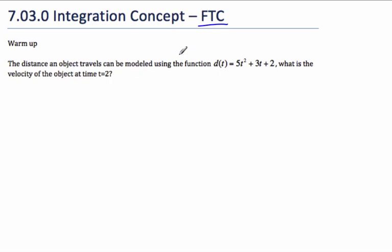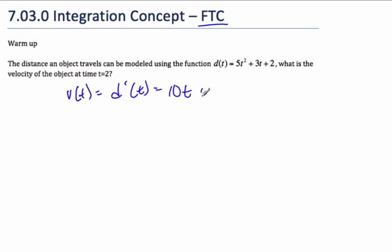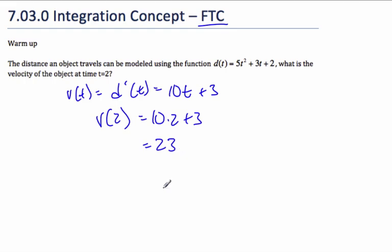To start us off, let's do something we know. I have the distance of an object modeled by a distance function. What is the velocity of the object at time t? Well, velocity is the rate of change of distance — like kilometers per hour, how distance is changing — so it is the derivative. The velocity equals the derivative of the distance. By the power rule I get 10t + 3. The velocity at t = 2 is 10 times 2 plus 3, which is 23.